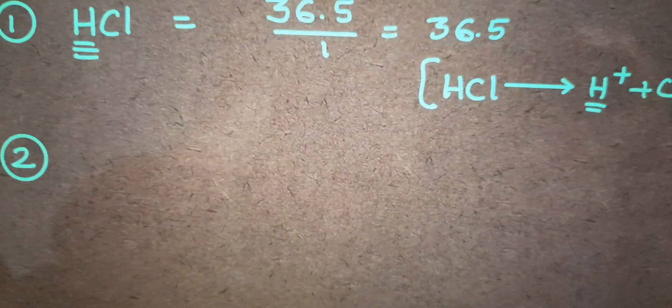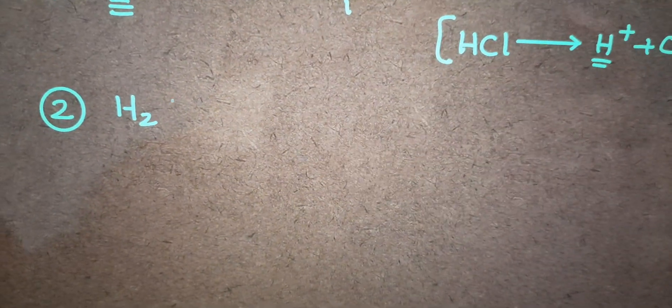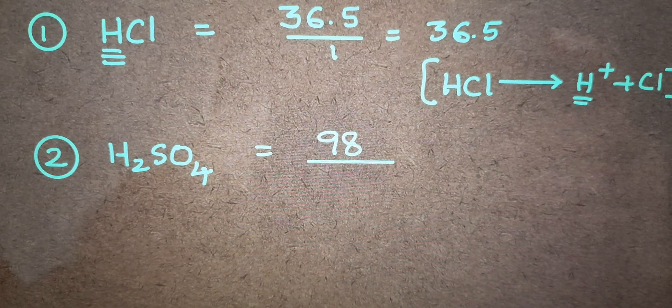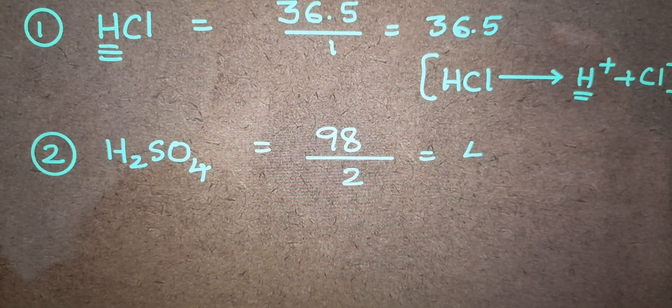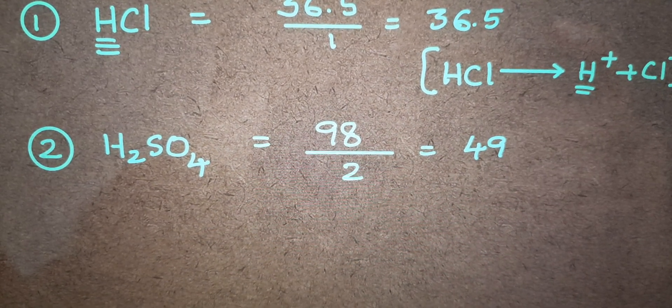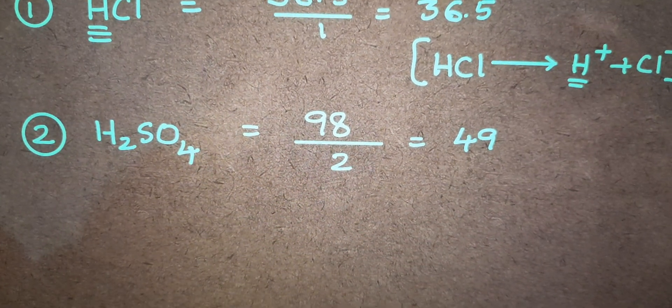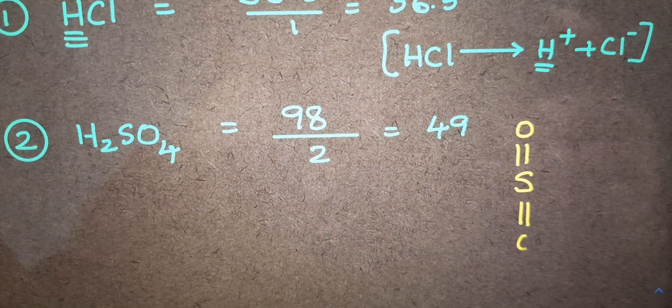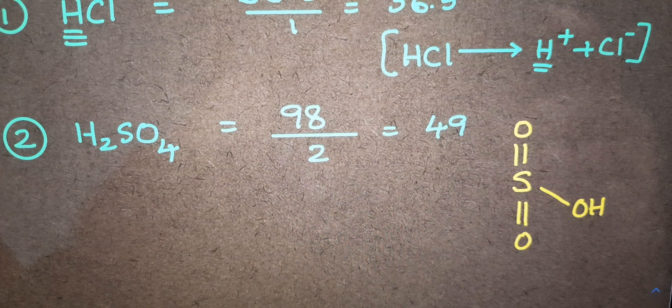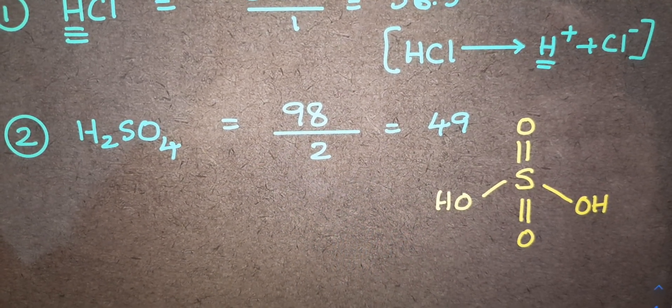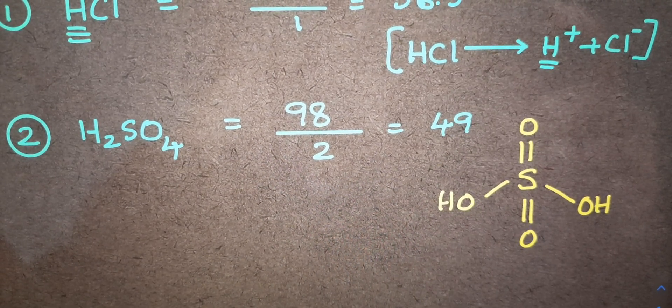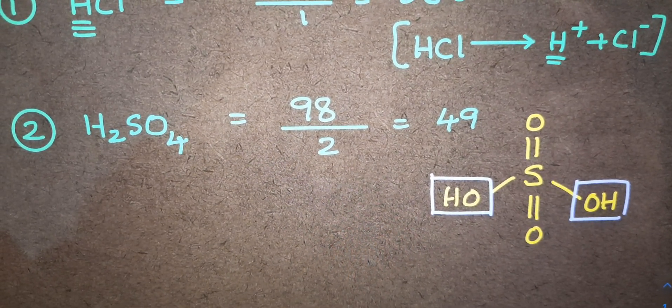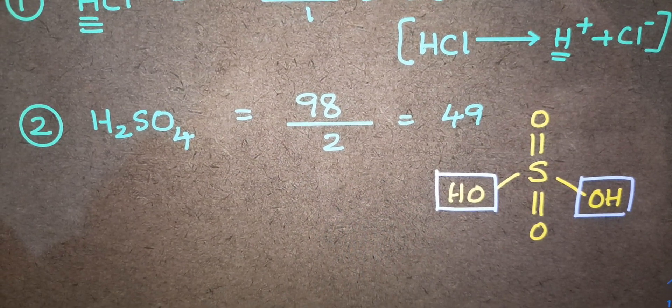Taking one more example, H2SO4. Here molecular weight is 98, and the number of displaceable hydrogens are 2, so equivalent weight is 49. Here number of displaceable hydrogens, how can we calculate? Very simple student. This is the structure of sulfuric acid. The hydrogens which are present on oxygen atoms, are more electronegative atoms, are responsible for acidic nature. So here, displaceable hydrogens are 2. These 2 hydrogens are responsible for the basicity of the acid.